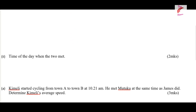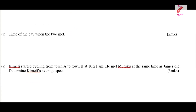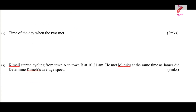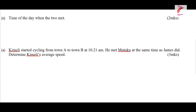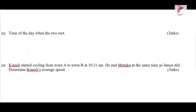The second question: the time of the day when the two met. The third question: Kimeli started cycling from town A to B at 10:21 a.m. He met Mutuko at the same time as James did. Determine Kimeli's average speed.